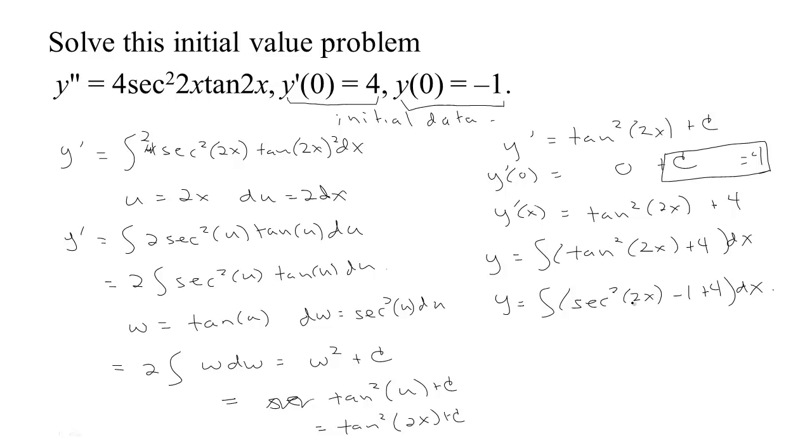So we have secant squared 2x minus 1 plus 4 dx. And the antiderivative of the secant squared would be the tangent of 2x. Although if I use the chain rule here, the derivative of the inside would kick out a 2. So I need to be ready for that 2 with a 1 half. Here, negative 1 and 4 make 3 and the antiderivative of 3 would be 3x plus c.